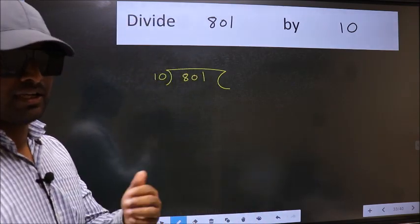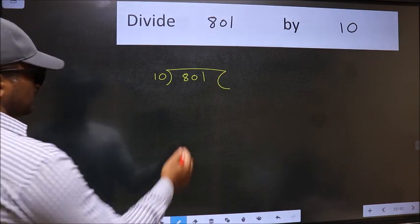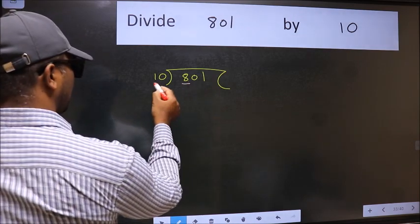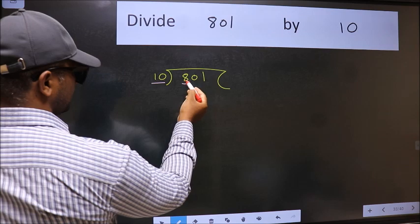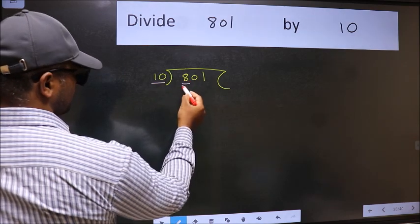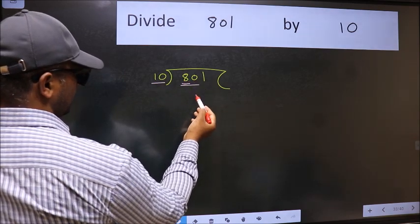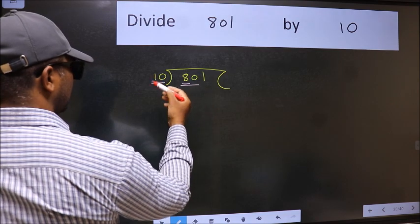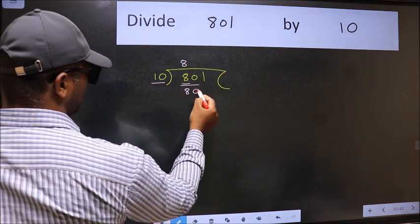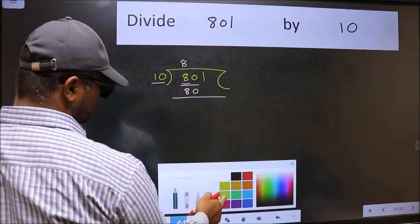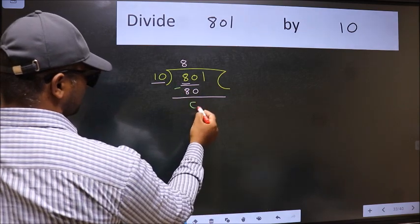Next, here we have 8 and here 10. 8 is smaller than 10, so we should take two numbers: 80. When do we get 80 in 10 table? 10 eights is 80. Now we should subtract, we get 0.